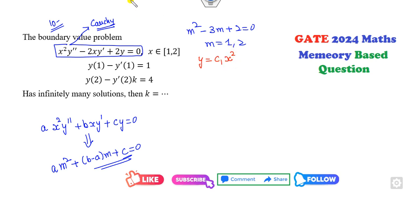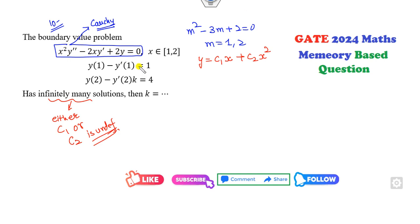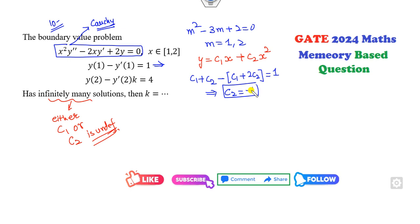So the solution is y = c₁x + c₂x². Now, the meaning of infinitely many solutions is that either c₁ or c₂ is undefined. The first condition gives y(1): c₁ + c₂, and from the derivative condition, c₁ cancels out and c₂ = −1. So clearly c₁ is undefined.